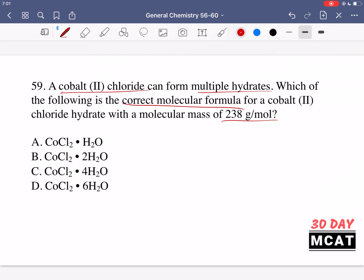This is essentially just going to the periodic table and seeing the molar masses of cobalt, chloride, and water, then adding that up. Cobalt is around 59 molar mass, chloride is about 35, and we have two chlorides. So cobalt chloride is about 130 grams per mole. If we take 238 and subtract 130, we get 108 grams per mole.